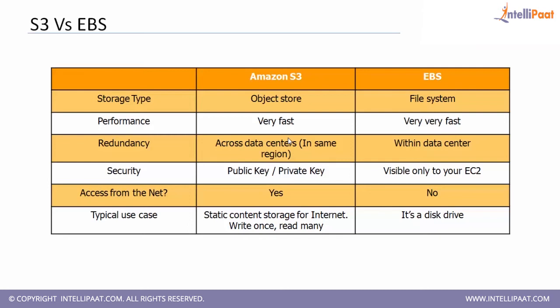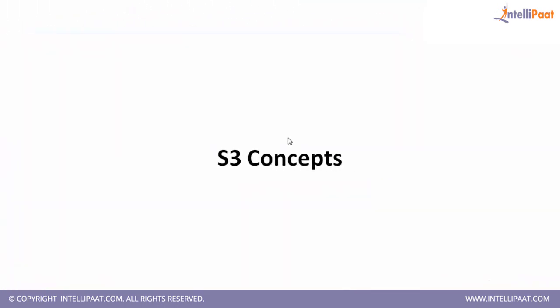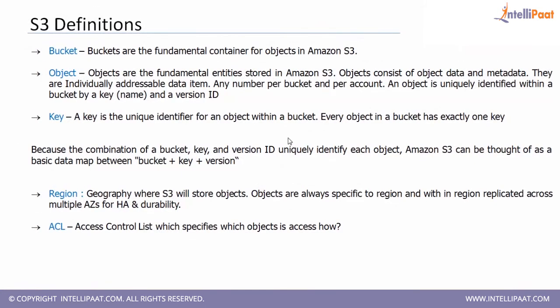Amazon S3 has more objects than Google Drive. Back in 2013-14, Amazon announced they had more than two trillion objects inside Amazon S3. That's because Netflix, Dropbox, Amazon — everything is stored in Amazon S3. Let's now understand some more concepts about Amazon S3.